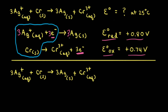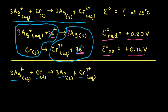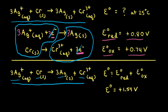When we add our two half reactions together, all the reactants and products combine, the three electrons cancel out on both sides, giving us 3Ag⁺ plus solid chromium goes to 3Ag plus Cr³⁺ — which is our original redox reaction. To find the standard voltage, we add the voltages for the two half reactions: positive 0.80 plus 0.74 equals positive 1.54 volts. So the standard potential at 25 degrees Celsius is positive 1.54 volts.